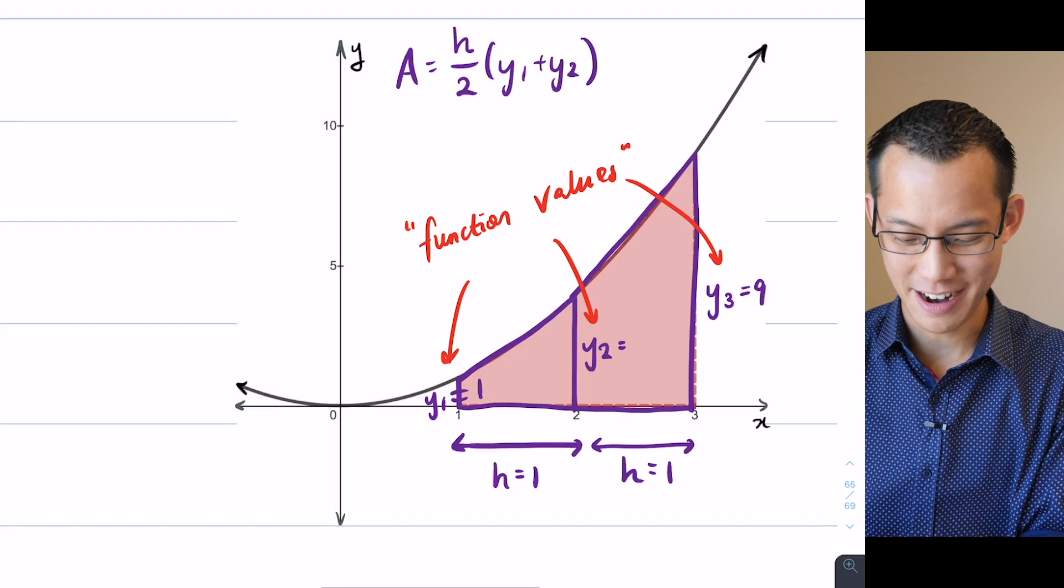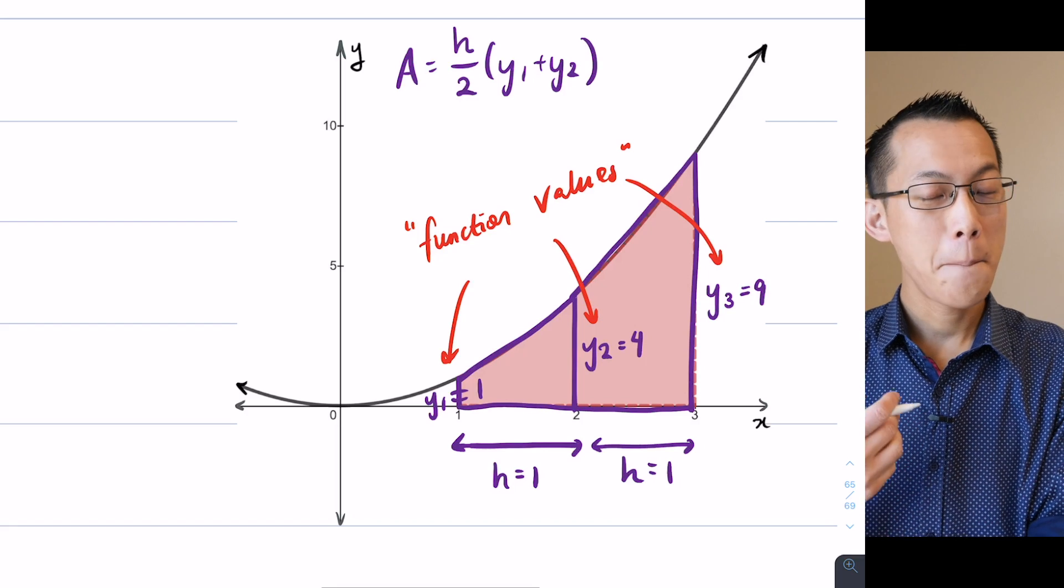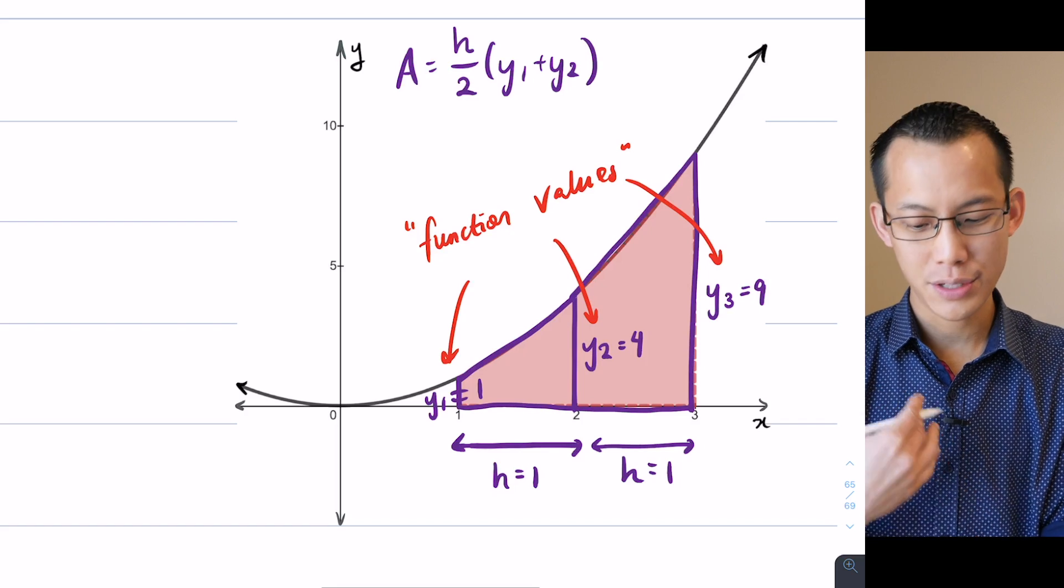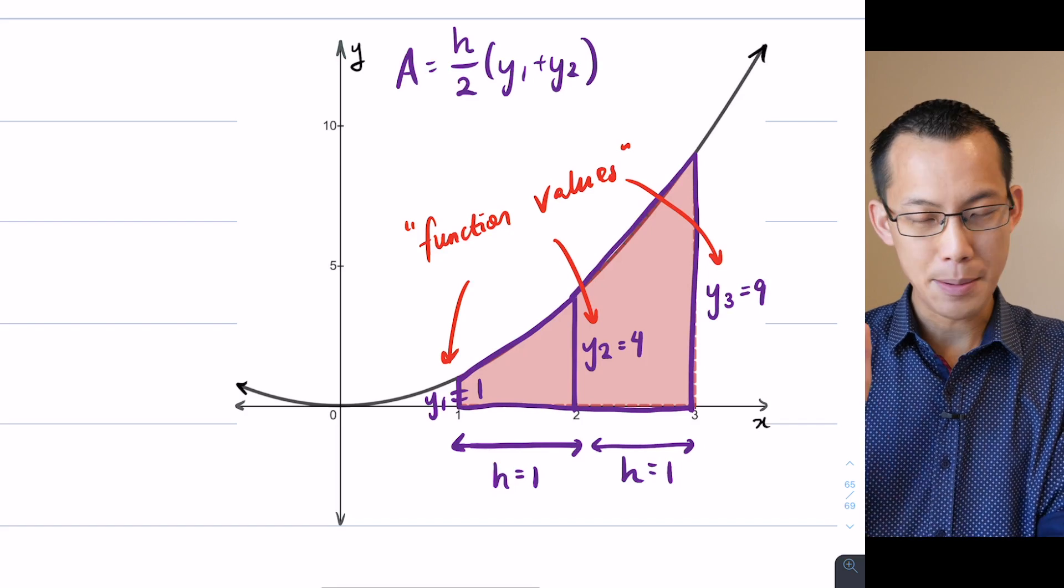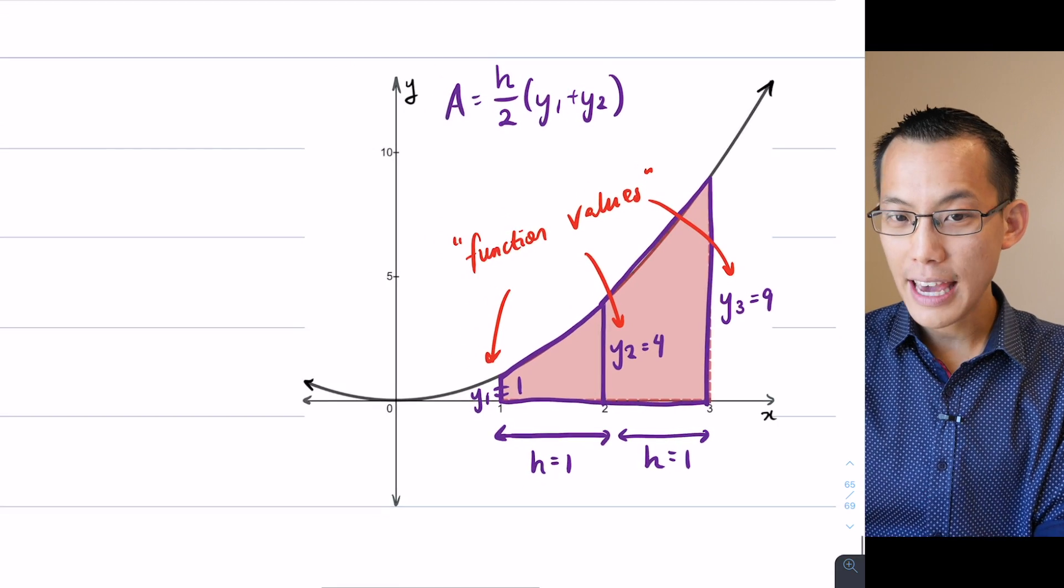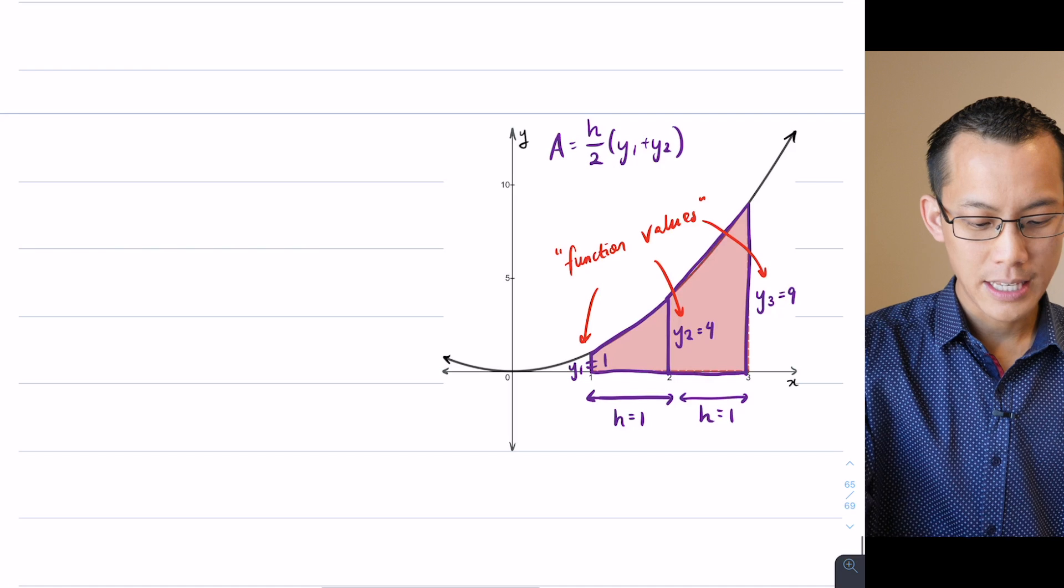Fantastic. All right, so there's my middle function value. It's going to be four. Now what I'm going to do is I'm going to say, this is still an approximation, right? I'm approximating a curvy thing with a straight line or multiple straight lines, but I'm going to get a better approximation, right? Let's have a go at this.